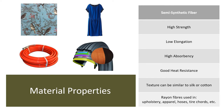Rayon is produced from polymers that are naturally occurring, but the addition of many processing steps and chemicals makes its resulting fibers semi-synthetic. The fibers are known to have high strength, low elongation, and high absorbency, in addition to good heat resistance. Rayon was originally made as a substitute to silk, but now it can be made to feel like a range of textures. It is these properties that make rayon the chosen fiber for industrial applications such as upholstery, apparel, hoses, and even tires.